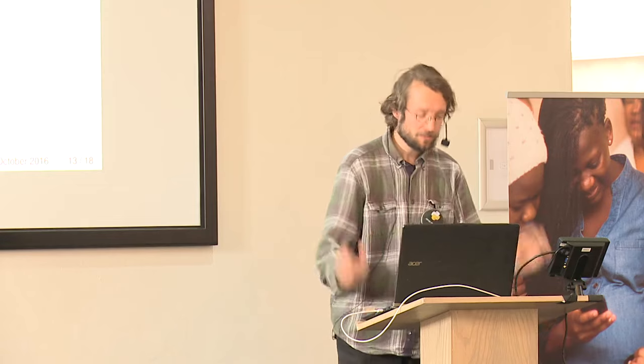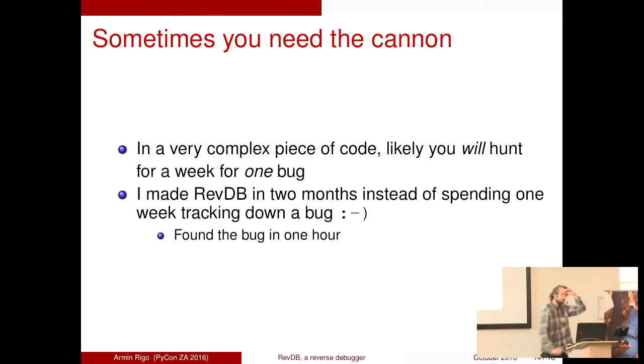The third point is that these tools are actually relatively complicated to do and they tend not to be open source so far. I mean, RR is open source, which is good, but it's also a recent development. Yes, so this is a cannon to take down the fly. However, sometimes, like very rarely, you really need it. It's a very complex piece of code. At one point in the multi-year development of this piece of code, you will spend one week on one bug. So as I explained, I spent two months instead of spending one week on one bug, and then the bug was found in one hour.